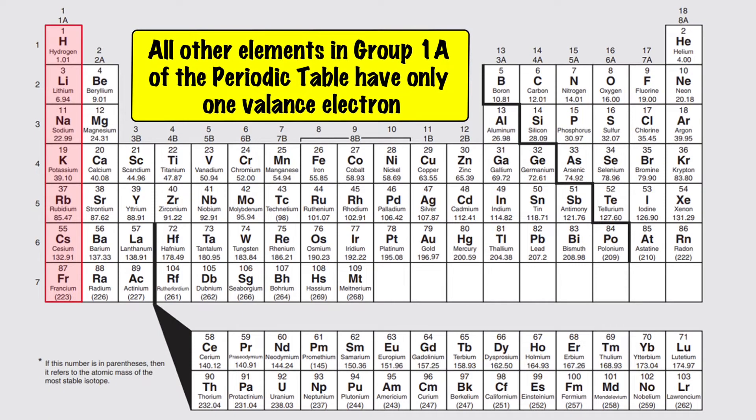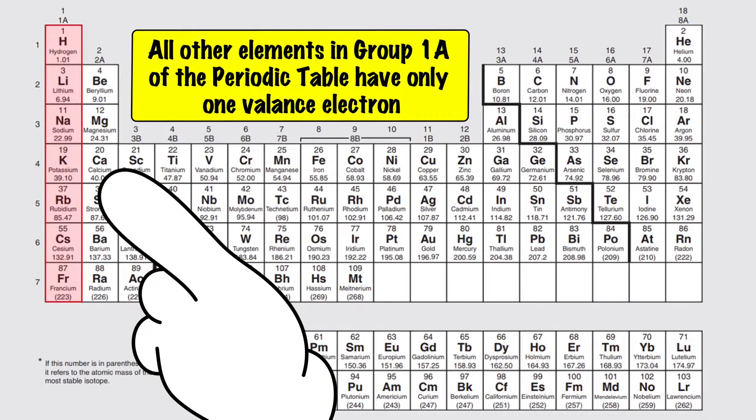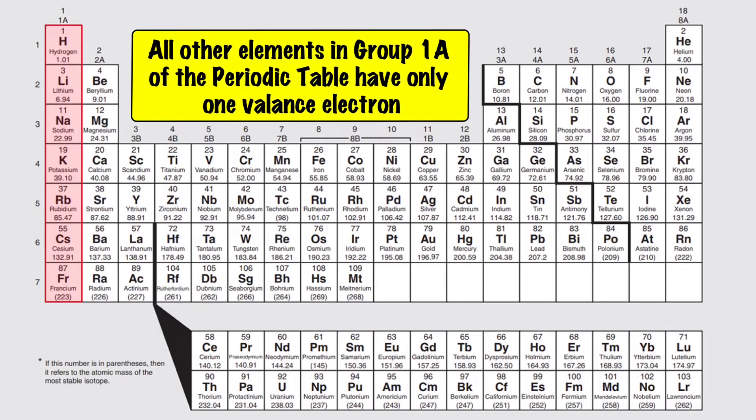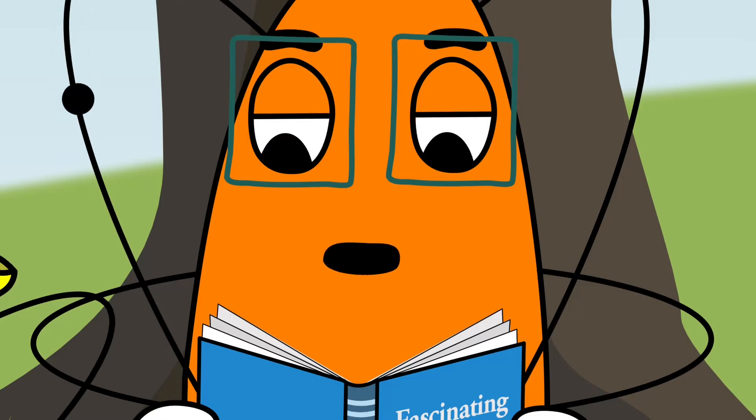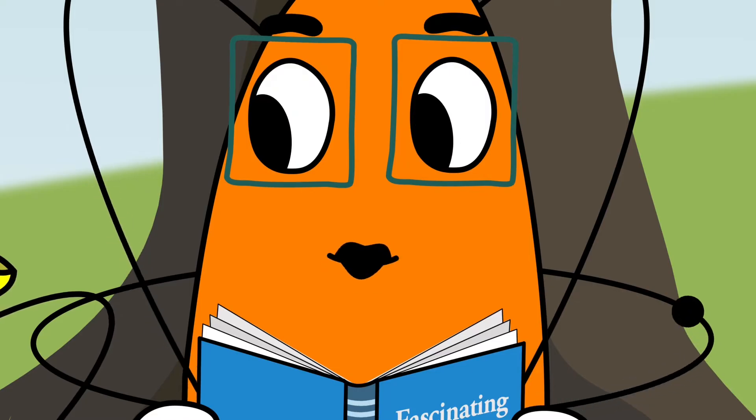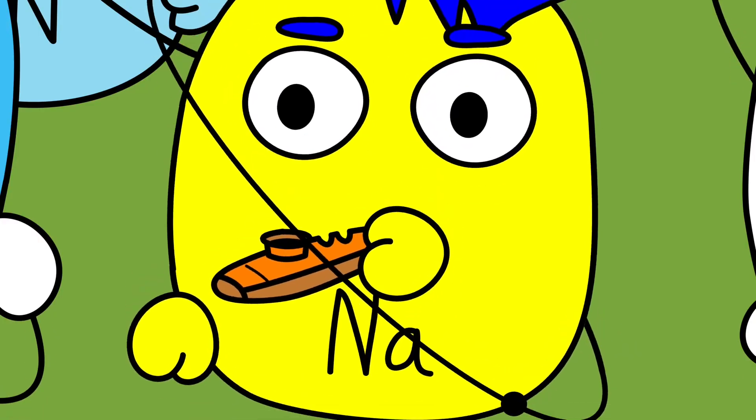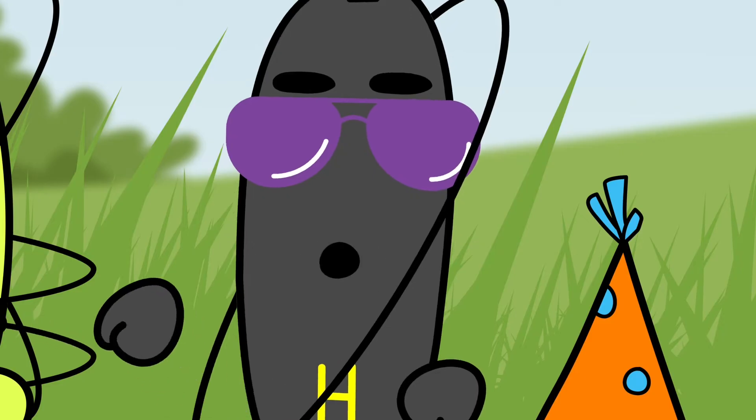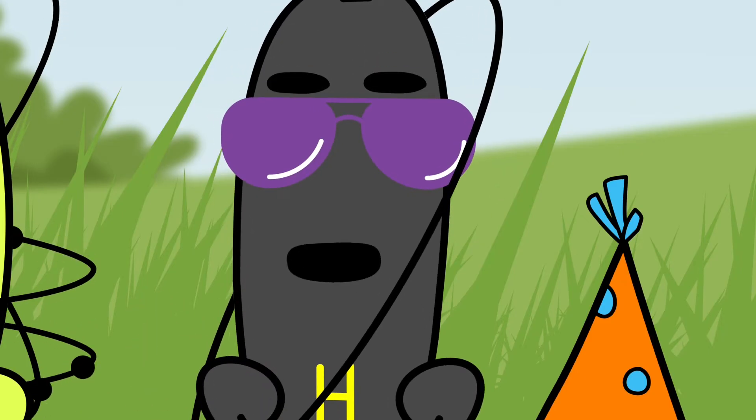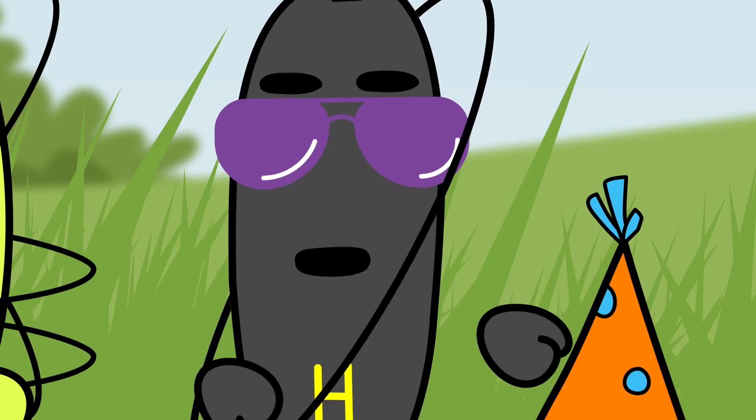All other elements in group 1A of the periodic table have only one valence electron as well. But, they also have inner electron shells. And unlike you, a gas, the others are all highly reactive, sometimes volatile, alkali metals. Like sodium over there. That crazy dude can't even get the letters on his belly right.